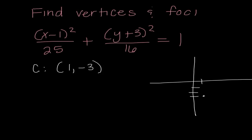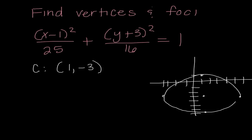I'll sketch this out as a visual aid. The denominator 25 means I move right 5 and left 5 from the center, since 5 is the square root of 25. The y denominator of 16 tells me to move up 4 and down 4. The vertices are always on the major axis — the longer axis — and here we go out further on x's because it has the bigger denominator of 25.